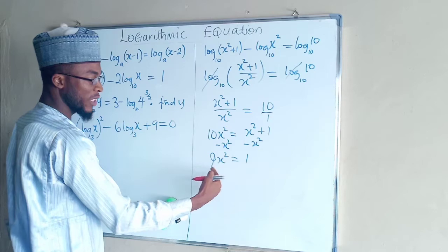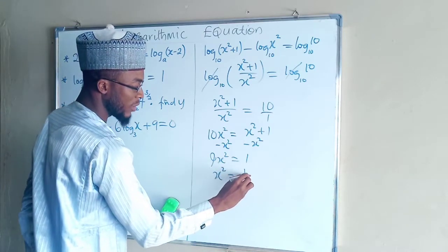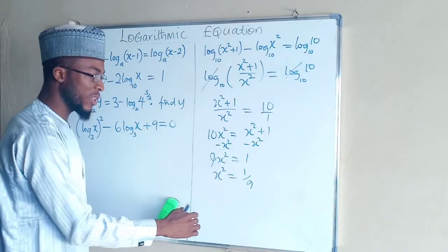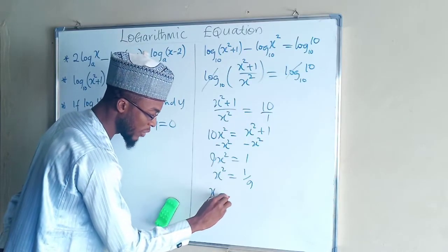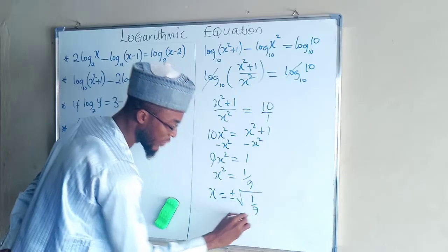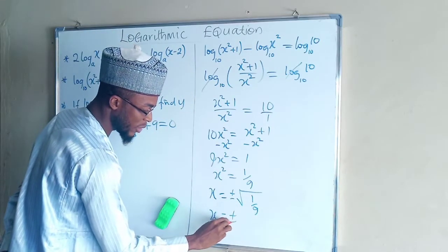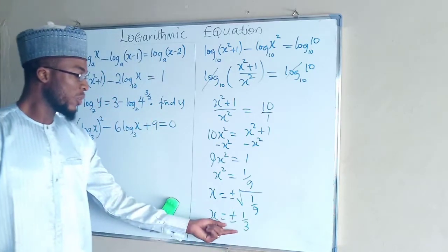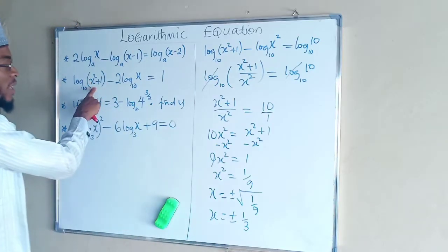You divide both sides by 9. x squared will be equal to 1 over 9. To find the real value of x, you need to take the square root of both sides. So x now will be equal to plus or minus the square root of 1 over 9, and this gives us plus or minus 1 over 3.